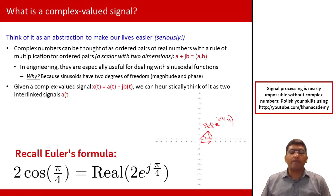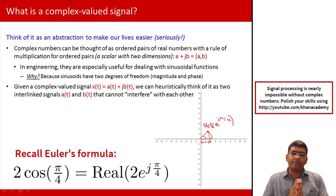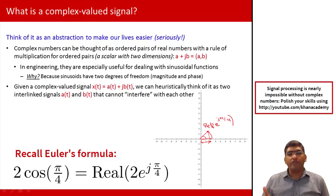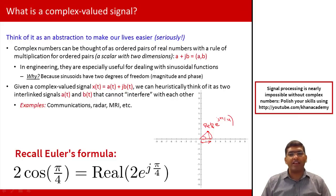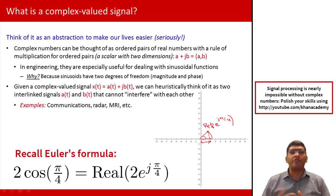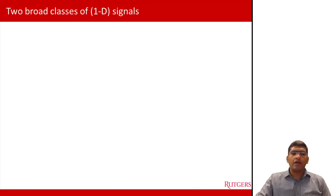Complex numbers are there to help us in analysis — they're an abstraction of a scalar with two degrees of freedom. If you have a complex-valued signal x(t), it is effectively two functions: a(t) + jb(t). Think of it as two interlinked signals a(t) and b(t) — one on the horizontal axis and the other on the vertical (j) axis. Complex-valued signals arise in many electrical engineering applications: circuit analysis, communications (I and Q or quadrature modulation), radar, MRI, and many others.